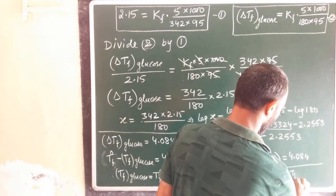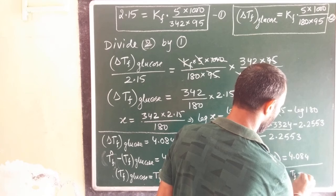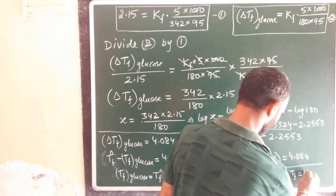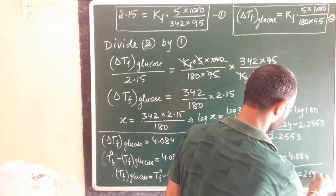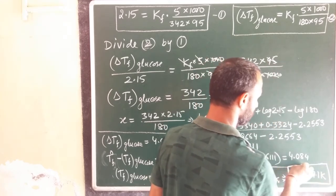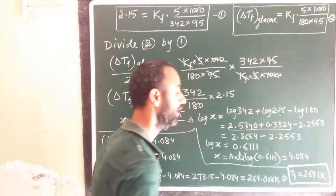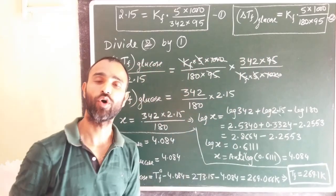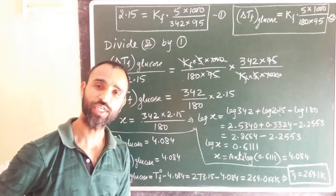The value comes out to be 269.066 Kelvin. That implies Tf for glucose is 269.1 almost. This is the value for the freezing point of 5% glucose in water.